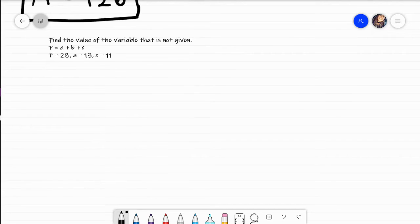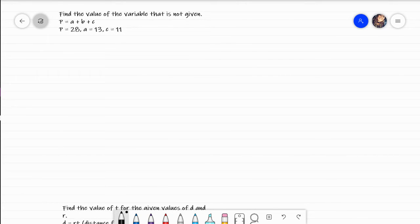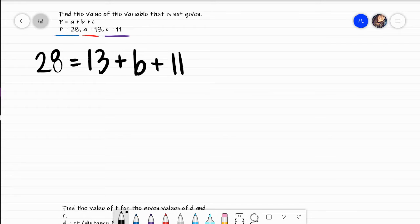Moving on to this problem, find the value of the variable that is not given. I notice that what I am given is my P, my A, and my C. So writing this down, I would write 28 equals my A is 13, it says plus B, I don't know what B is, plus C which is 11.